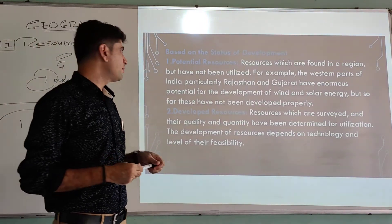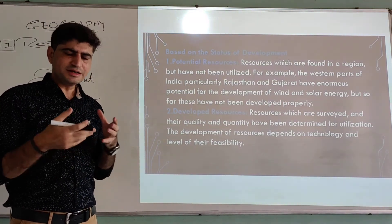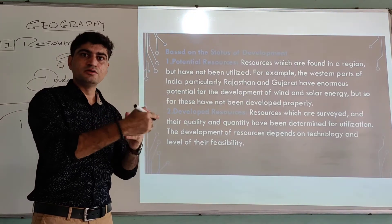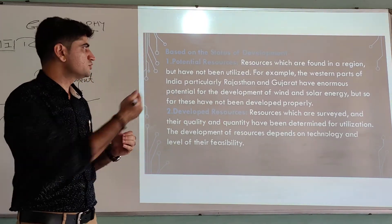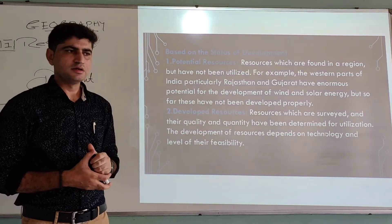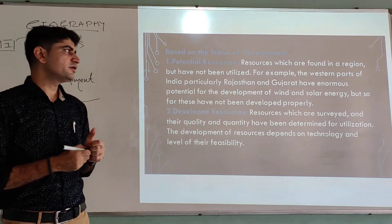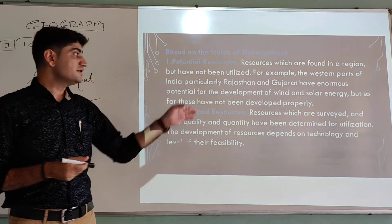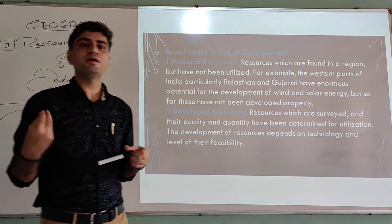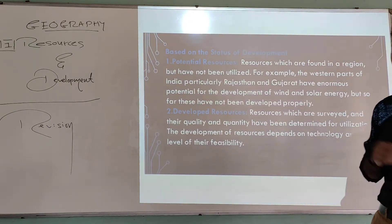Classification based on the status of development. First: potential resources. Potential means not utilized yet, but having potential — scope and chances. Potential resources are resources which are found in a region and are available but have not been utilized due to various factors. For example, the western part of India, particularly Rajasthan and Gujarat, has enormous potential for the development of wind and solar energy, but so far these have not been fully developed.